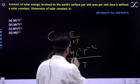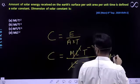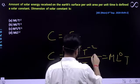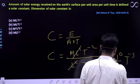C ka dimension jaldi se find karo. L² se, L cancel M, L ki power 0 and T ki power. Yeh niche jayega, it would be equal to minus 3.